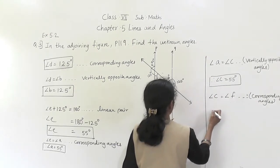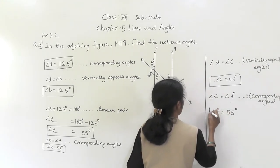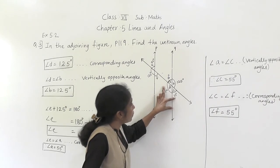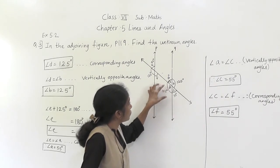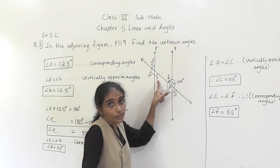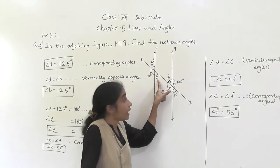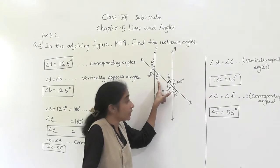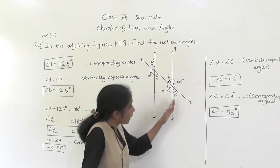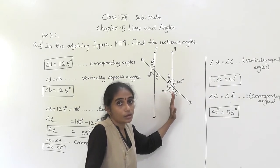Angle F is equal to 55 degrees. You can also use the property: angles made by same side of transversal are supplementary. 125 plus F equals 180 degrees. So here you can find the answer using suitable properties.